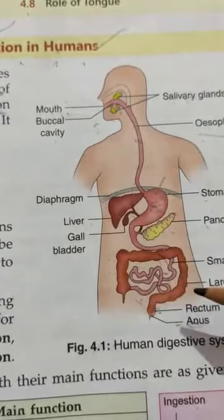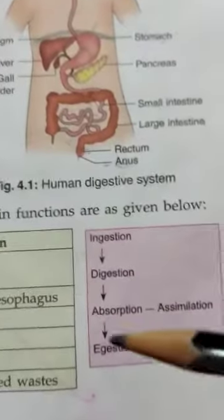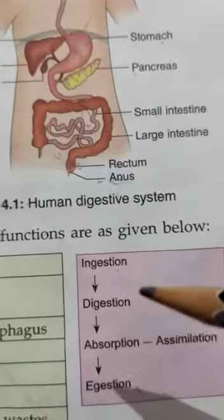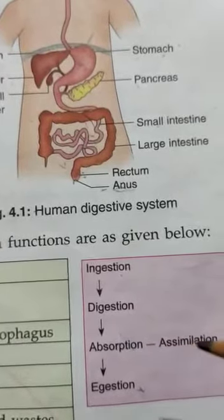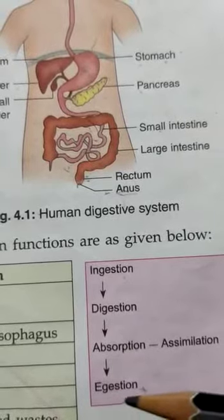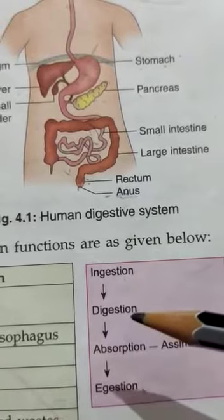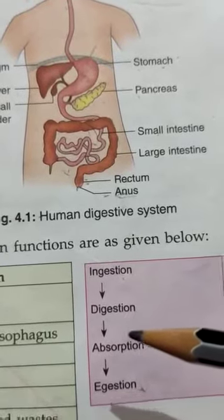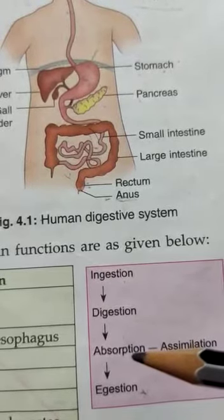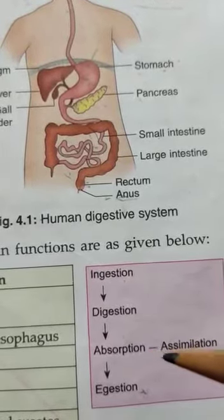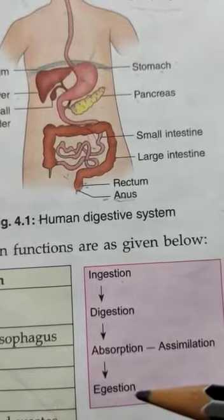We also learned about the functions of each part of the alimentary canal. Basically the human digestive system has five processes: ingestion, digestion, absorption, assimilation, and egestion. Ingestion means intake of food; digestion means breaking down of food molecules into smaller molecules; absorption means absorbing the food in the form of nutrients; assimilation means utilization of energy; egestion means removal of wastes from the body.